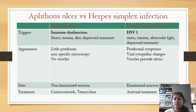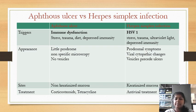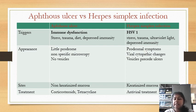But in herpes simplex infection, you can see prodromal symptoms like fever and pain, viral changes visible on histopathology, and vesicles are formed before the formation of ulcers. The common site of occurrence in Aphthous Ulcer is non-keratinized mucosa, but herpes simplex infection is mainly seen on the keratinized mucosa. Treatment for Aphthous Ulcer involves corticosteroids and tetracycline, but antiviral treatment is necessary for herpes simplex infection.